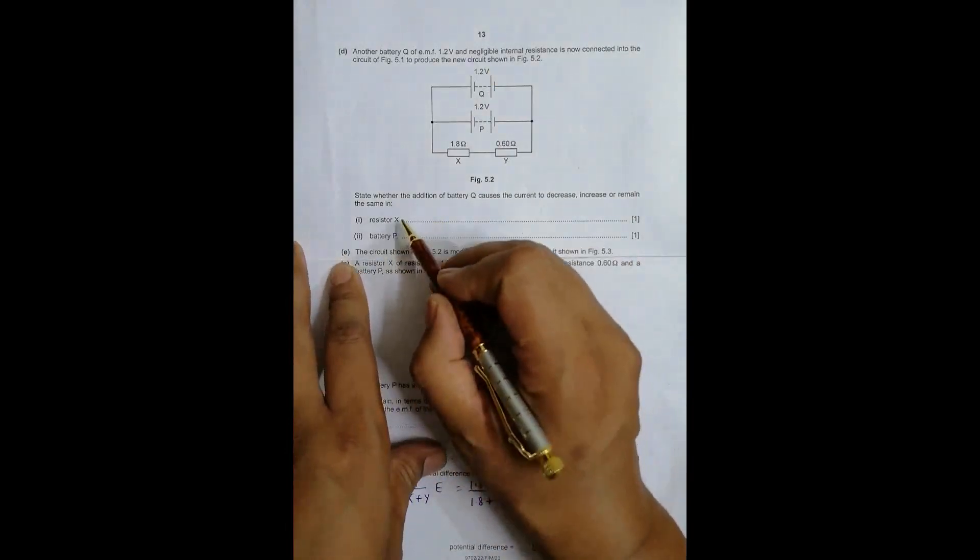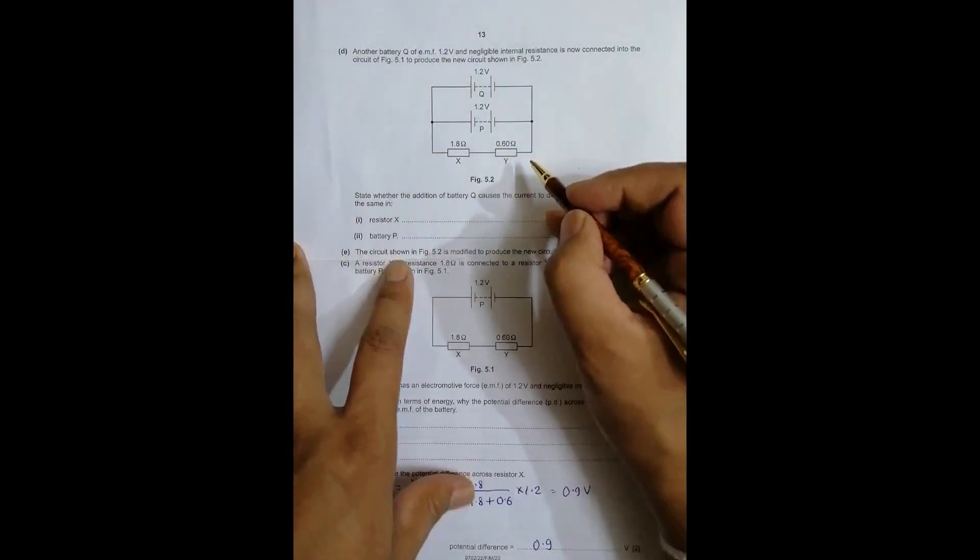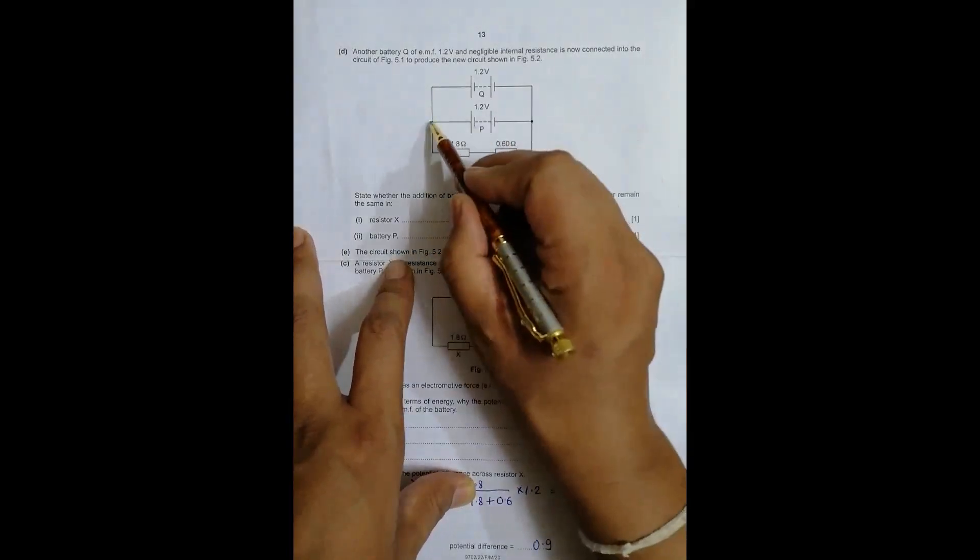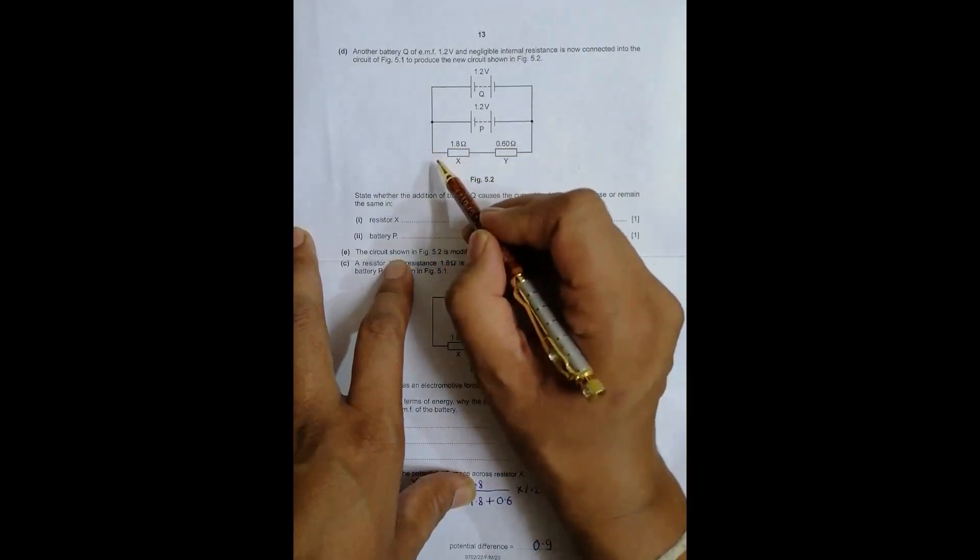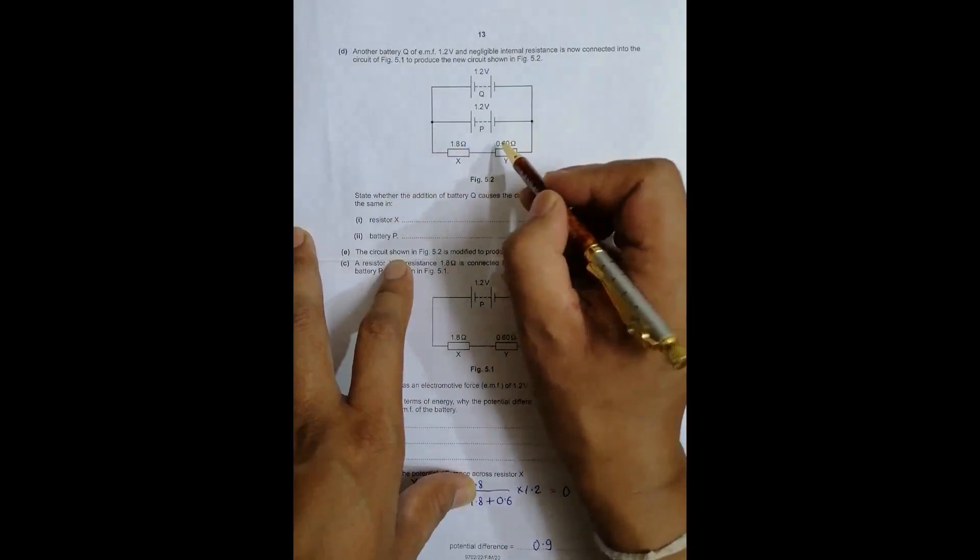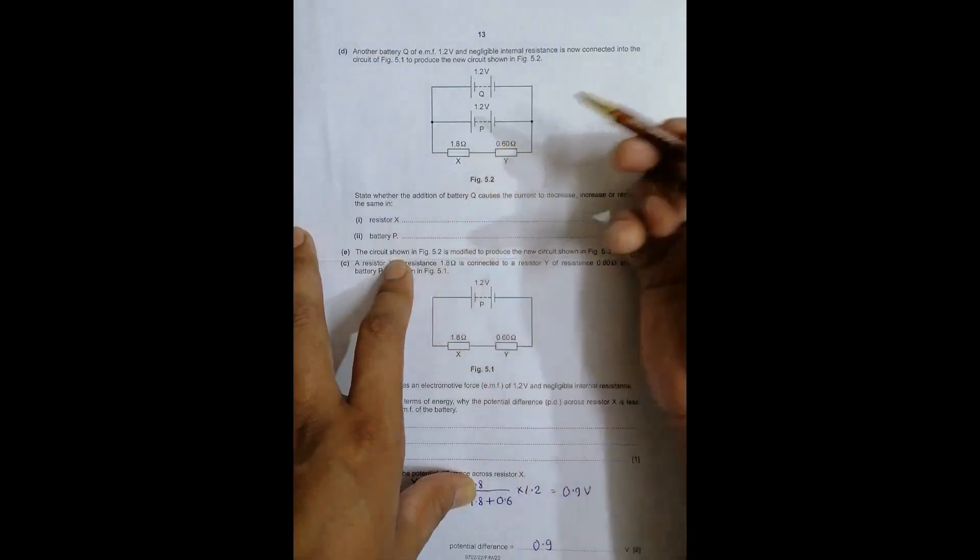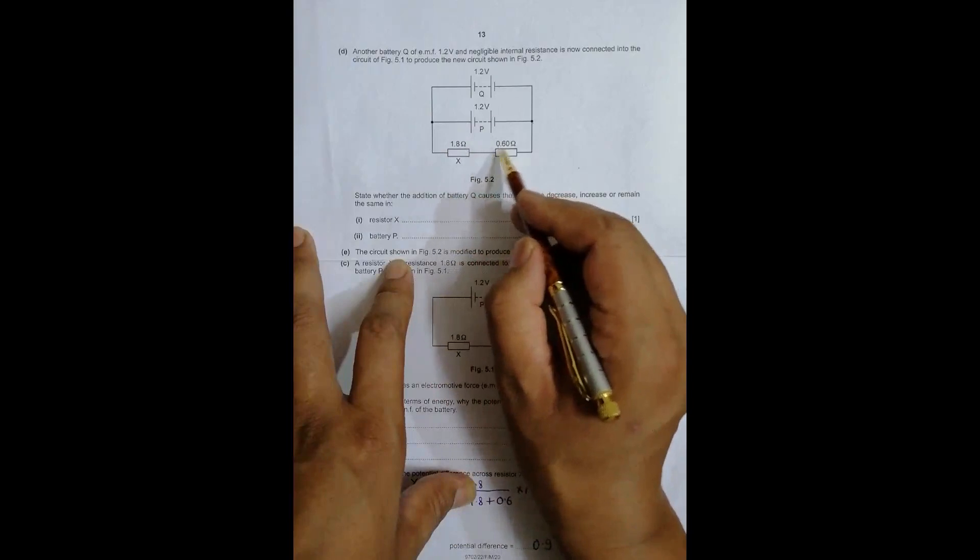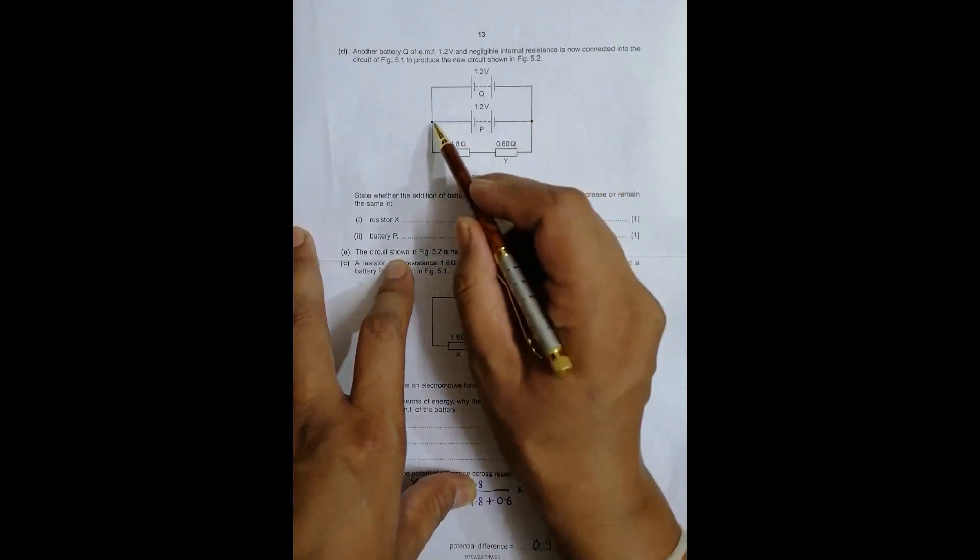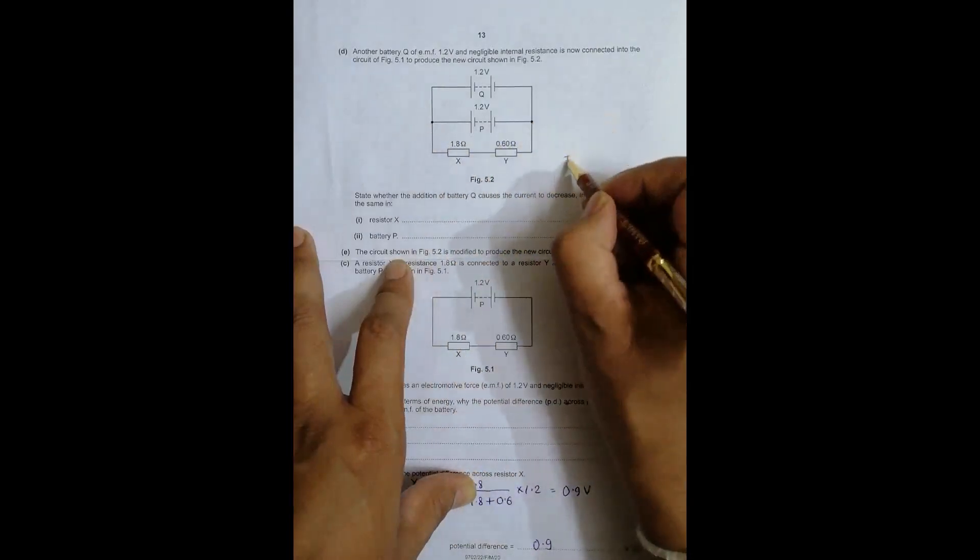When we connect the batteries in parallel, the PD should be the same because it is a common point. The PD across the whole combination is the same. Since resistance is the same as before, X and Y are 1.8 and 0.6 ohm, and PD is also the same, the current should be the same because I = V/R total.